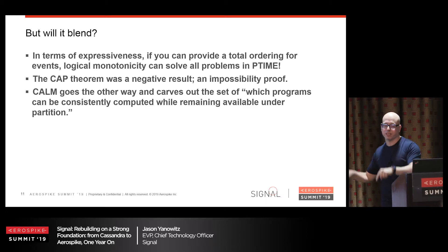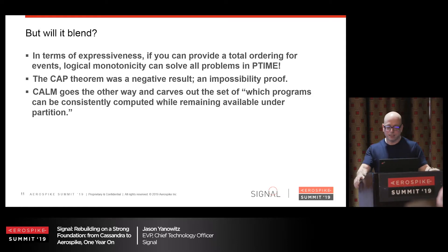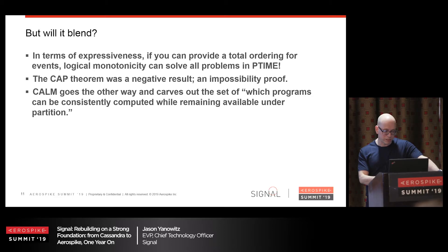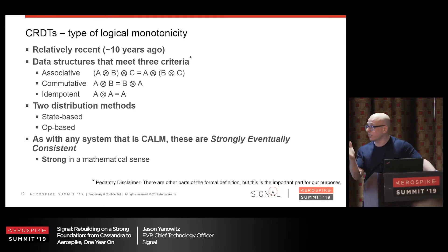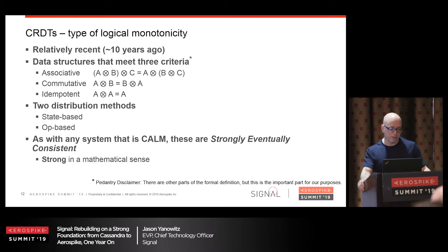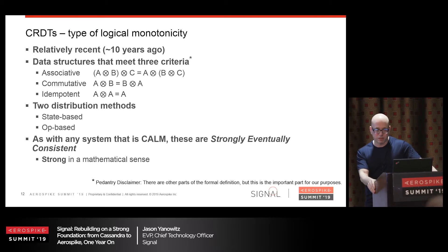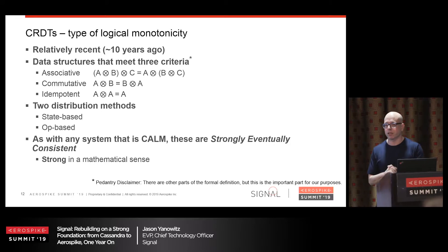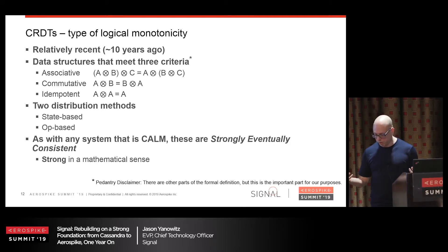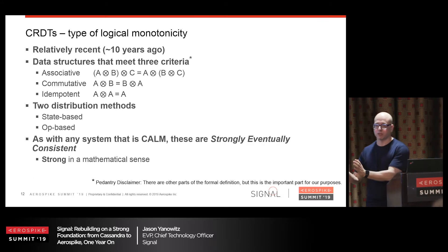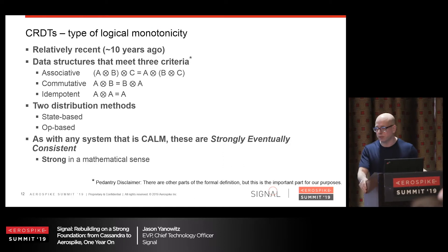It turns out that CRDTs are logical monotonicity — a type of it. That adds to the beauty of these two things coming out at around the same time. CRDTs are data structures whose operations obey three laws: they're associative, commutative, and idempotent. There are two main ways to distribute these data structures. You can put the entire state on the wire and a downstream processor can merge two of those data structures obeying these three rules — that's state-based. Or you can ship operations that should be applied to an empty data structure, building up state while obeying associativity, commutativity, and idempotence — that's operation-based. We're building an op-based version.